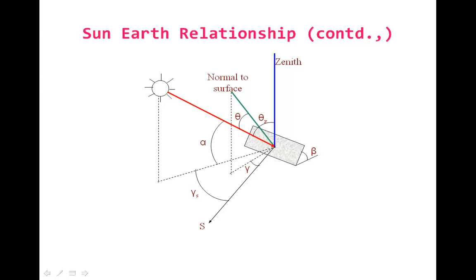Now, as per my question, if theta becomes theta-Z, gamma becomes gamma-S. There are two orientations of the tracking. One is the horizontal rotation, the second one is the vertical rotation. The horizontal rotation means the azimuth angle tracking, the gamma becomes gamma-S by rotating this inclined surface.